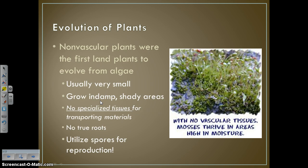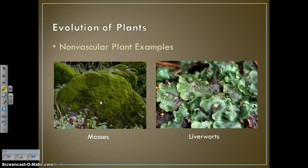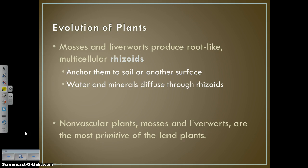Our very first true plants were non-vascular plants, meaning they didn't have any specialized tissues for transporting materials up and down through the plant. So they were very small, grew in damp shady areas, required more moisture than other plants, did not have true roots, and they reproduced using spores. Examples of non-vascular plants are mosses and liverworts. They produce root-like structures called rhizoids, which anchor them to the soil and allow water and minerals to simply diffuse — it's just simple osmosis and diffusion. Non-vascular plants are the most primitive of the land plants.